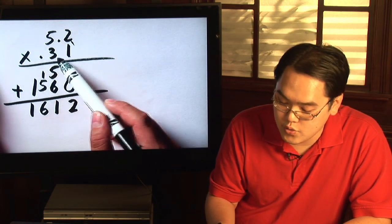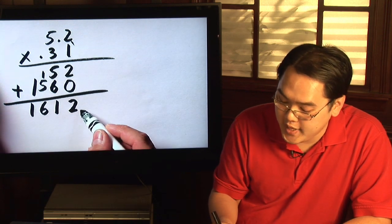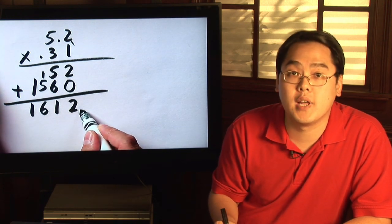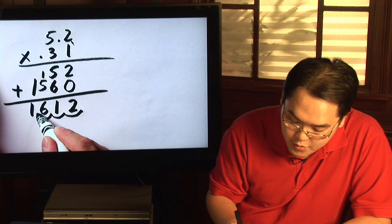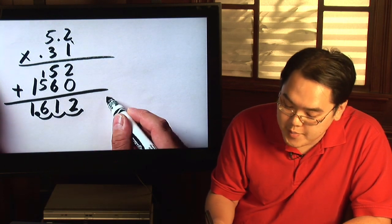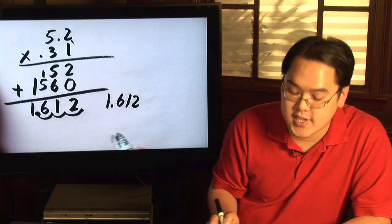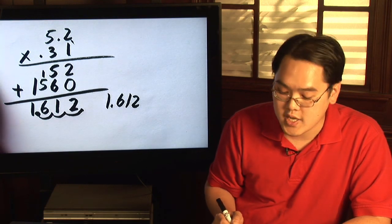That's 1, 2, 3 decimal places total. So from here, just move the decimal left that many places: 1, 2, 3. And place it there. So 1.612 is what you get when you multiply 5.2 times 0.31.